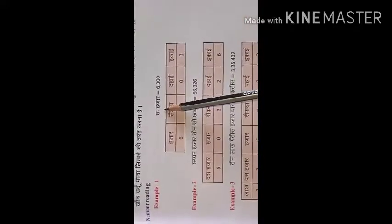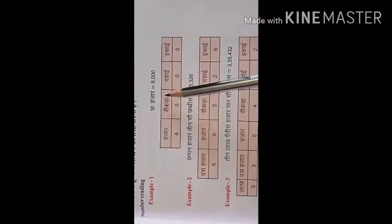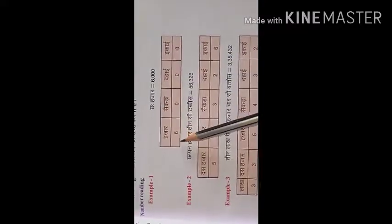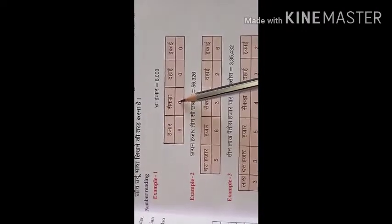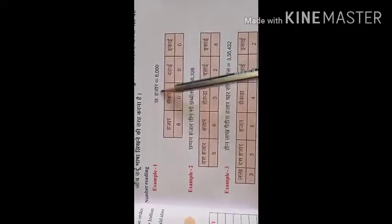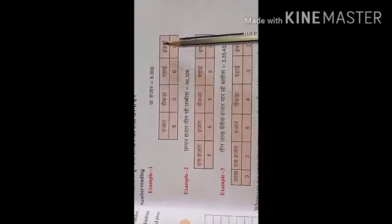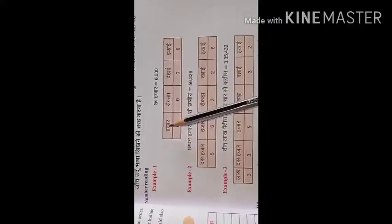Example one: chhe hajar equals six thousand. How do we write six thousand in column form? Ones: zero, tens: zero, hundreds: zero, thousands: six. So six thousand is written in these columns as 6, 0, 0, 0.